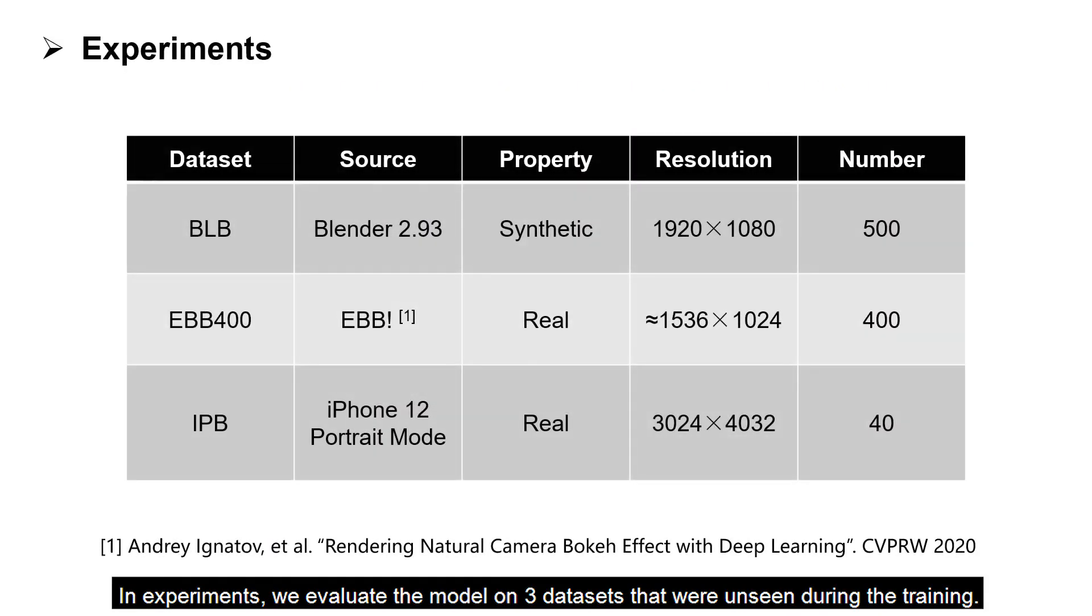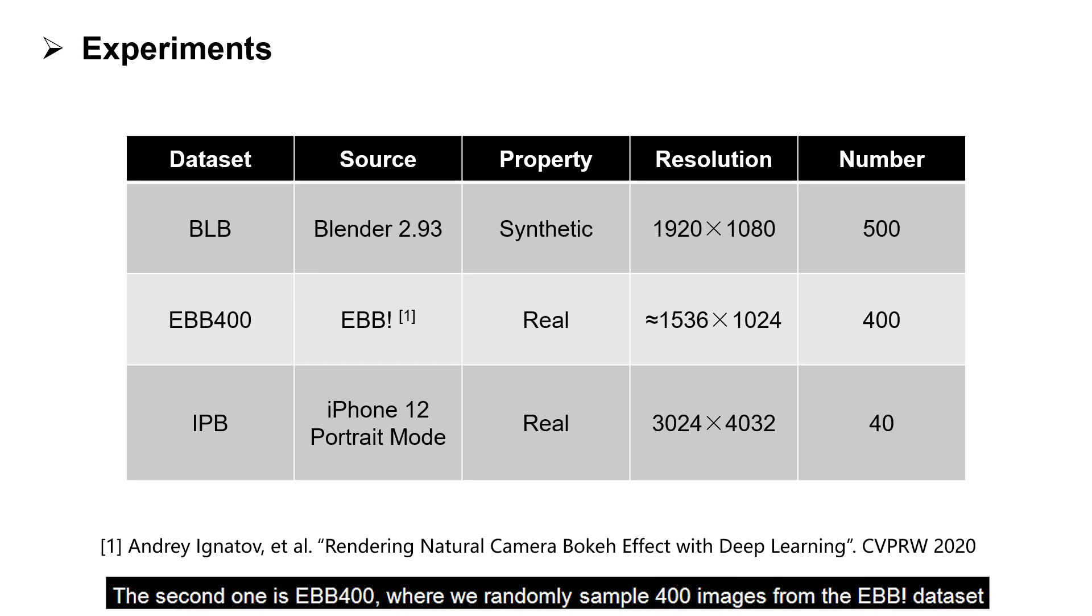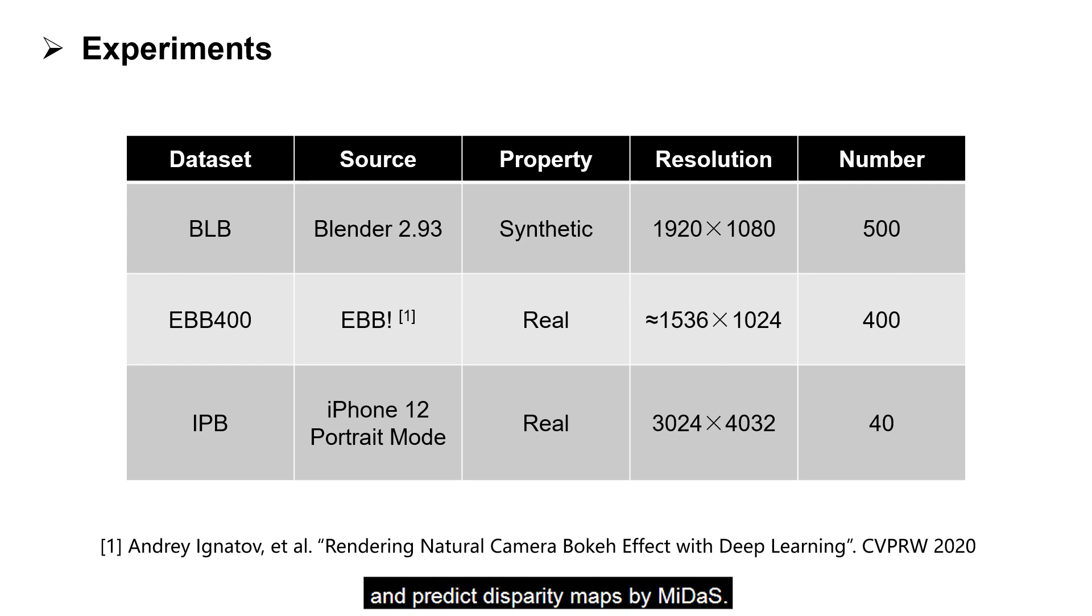In experiments, we evaluate the model on 3 datasets that were unseen during training. The first one is our proposed BLB dataset. The second one is EBB400, where we randomly sample 400 images from the EBB dataset and predict disparity maps by MIDAS. The last dataset IPB is captured by iPhone 12 Portrait Mode. We use this dataset for user study.